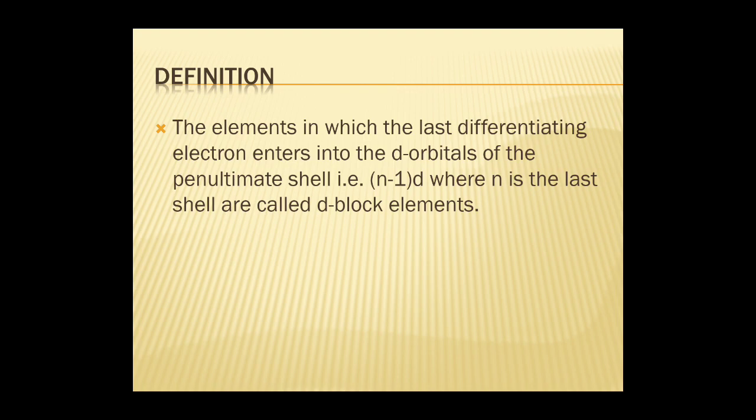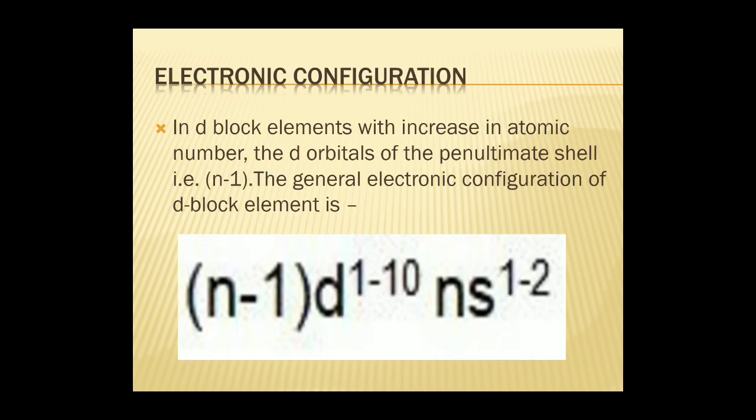In simple words, the element in which the last differentiating electron enters the D orbitals of the penultimate shell — that is (n−1)d, where n is the last shell — is called a D block element.